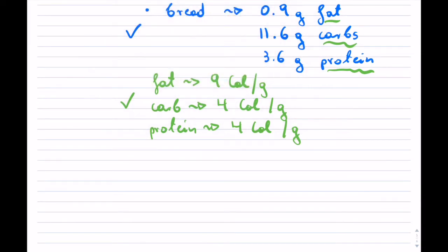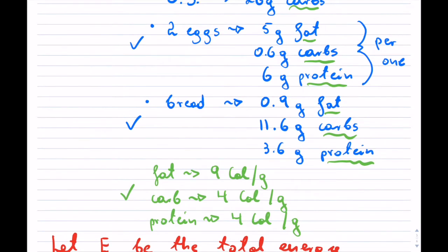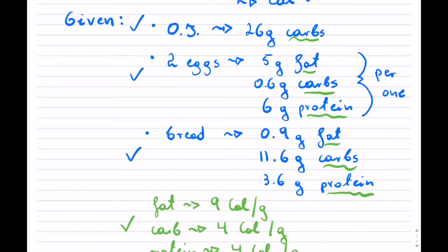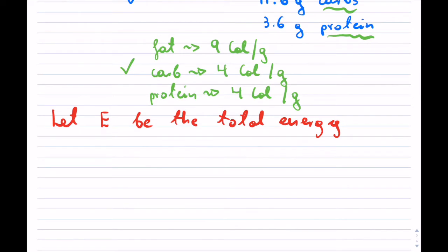Let's provide our let statement. Let E be the total energy from the meal. We know we're using calories. Notice all our units are consistent — we have all grams and calories — and now we can begin.